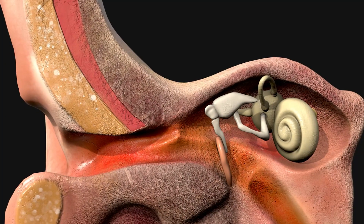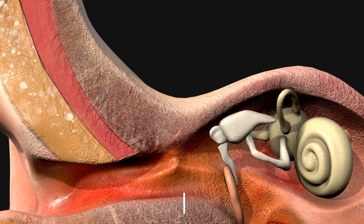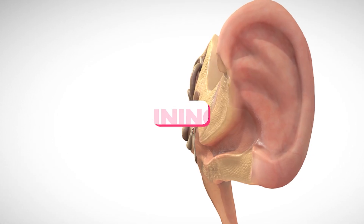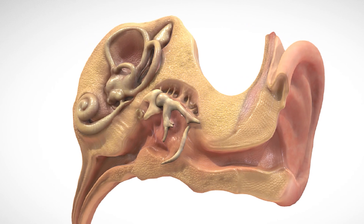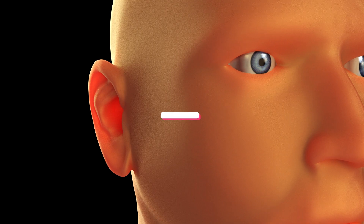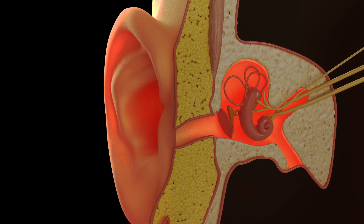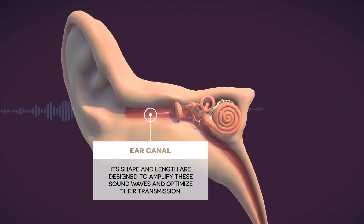The outer third of the canal is made of cartilage, similar to the pinna, while the inner two-thirds consist of bone surrounded by a thin layer of skin. The skin lining the ear canal contains hair follicles and glands that produce earwax (cerumen), which plays several important roles in ear health. The primary function of the ear canal is to conduct sound waves from the outer ear to the eardrum, with its shape and length designed to amplify and optimize sound transmission.